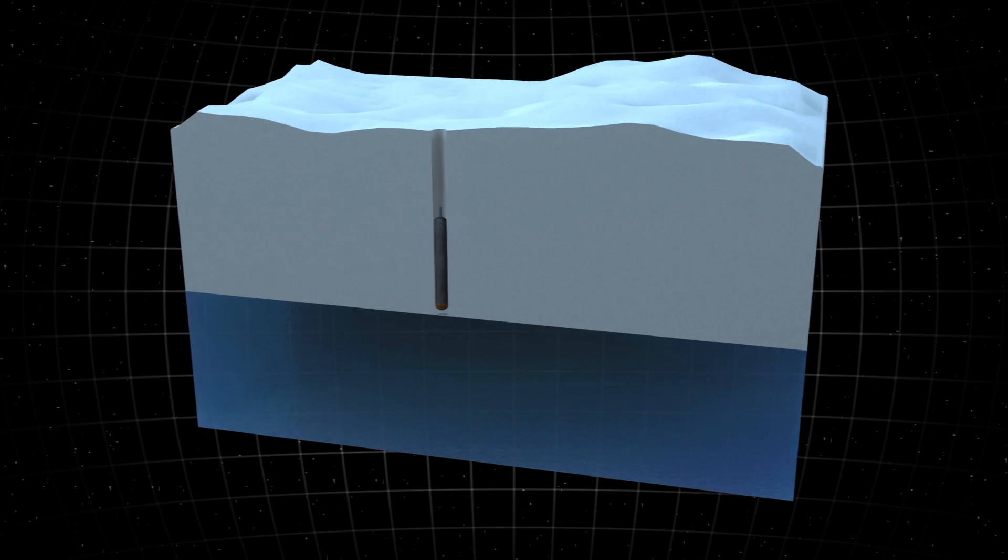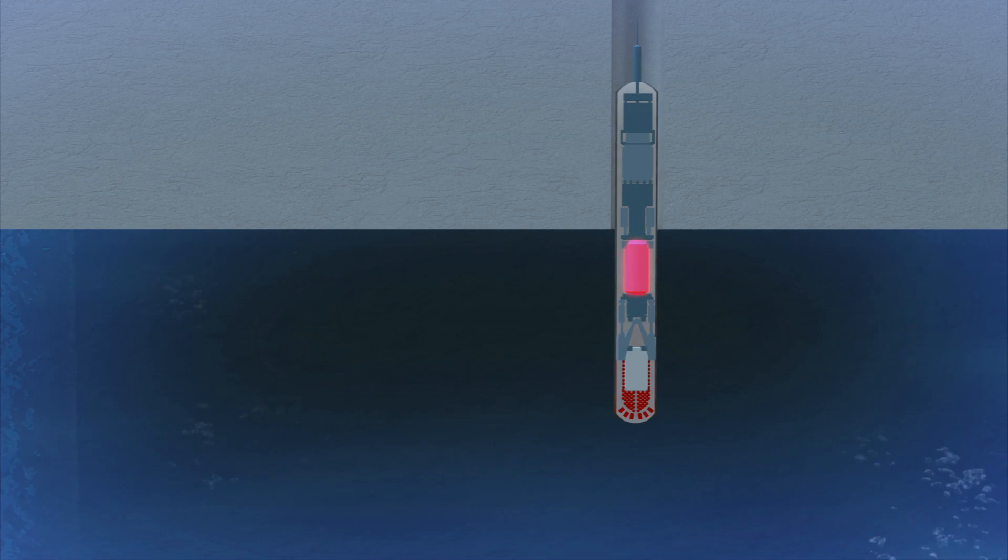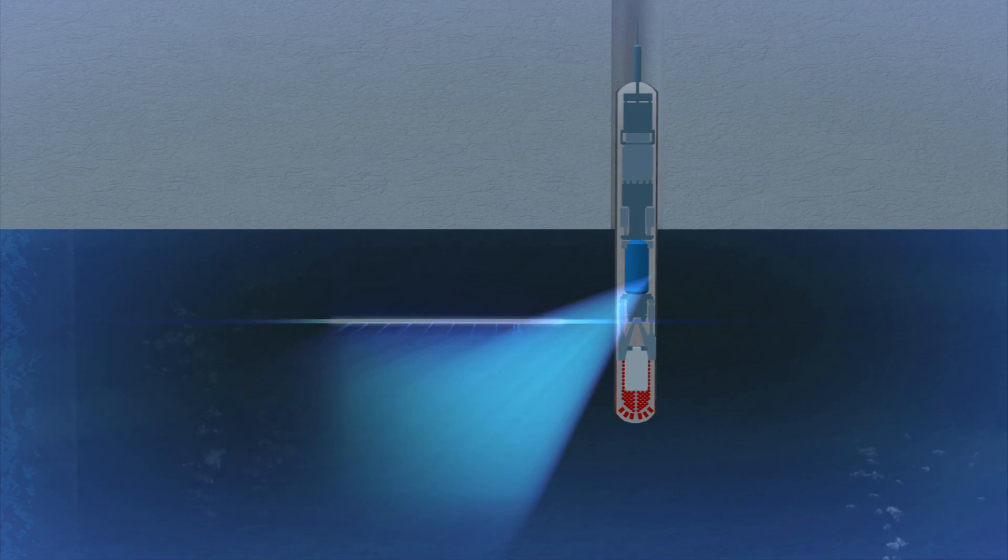The robot used on Europa will be bigger and faster and would be able to carry smaller robots that it will deploy to map the sea floor and scan for signs of life.